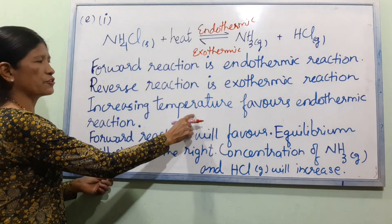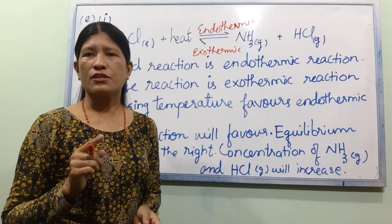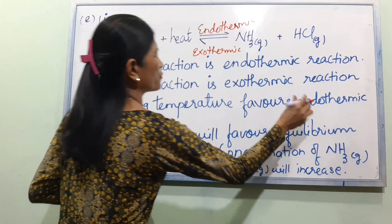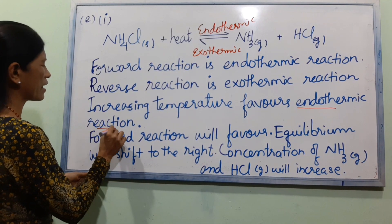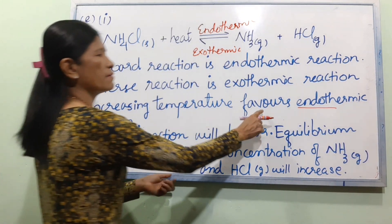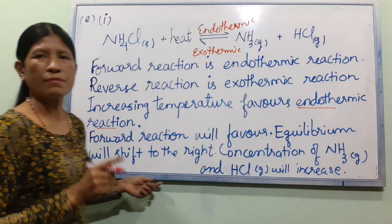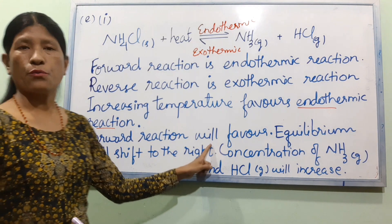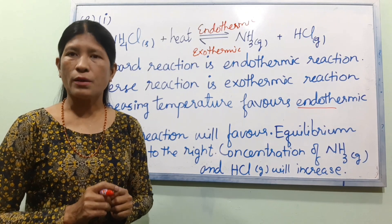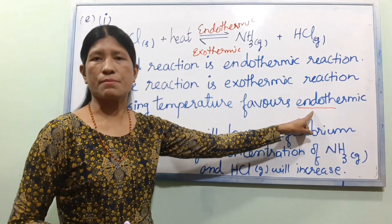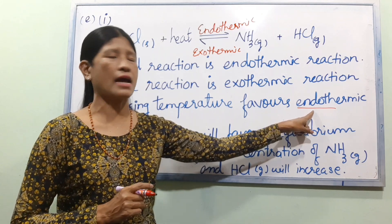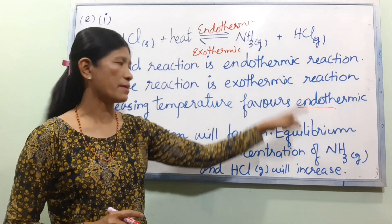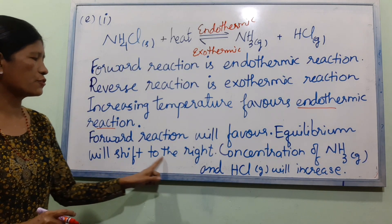Increasing temperature favors the endothermic reaction. The endothermic reaction will see the right movement — the forward reaction is the endothermic reaction. The equilibrium shifts to the right.